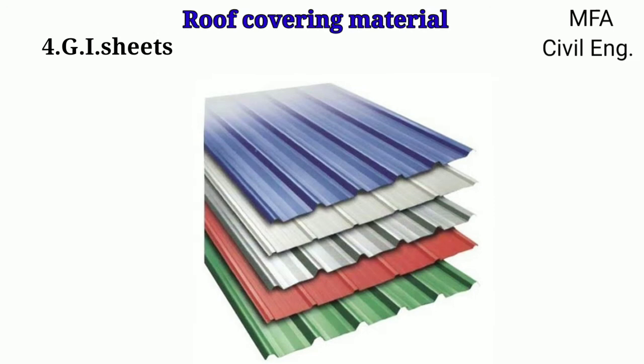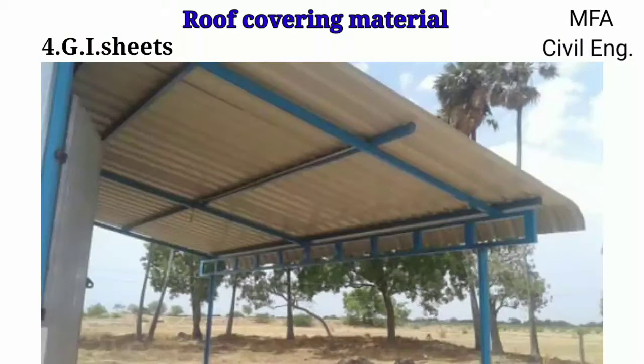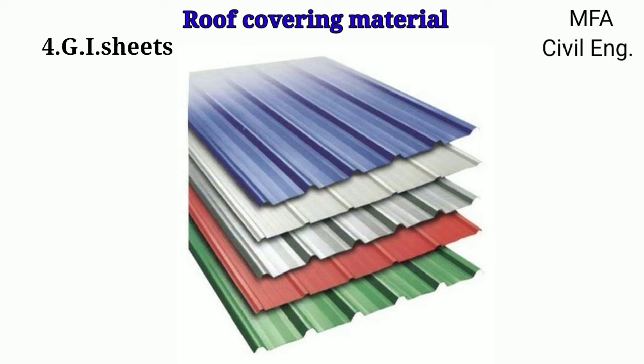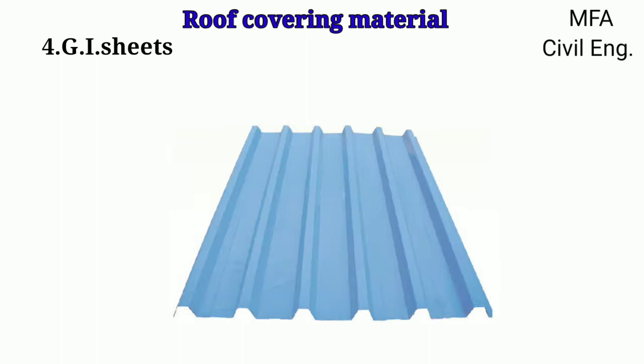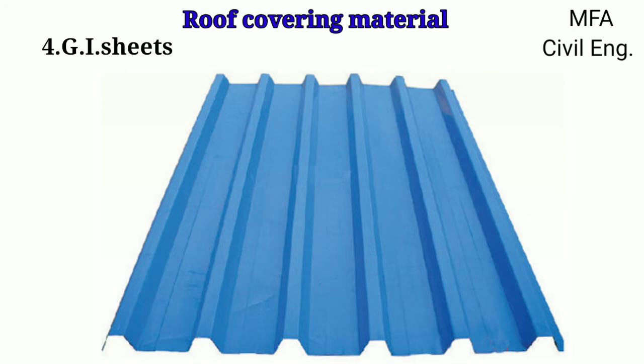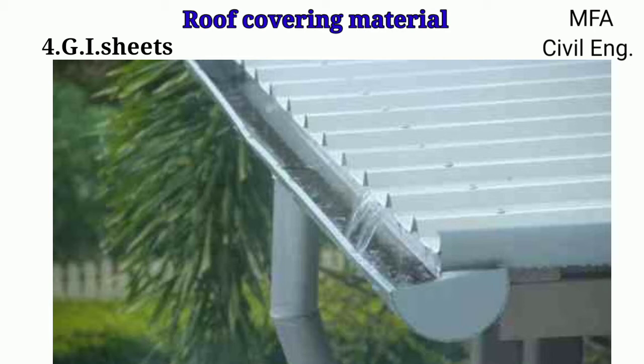Galvanized iron sheets are extensively used as a roof covering material in factories, workshops, sheds and cheap buildings. These sheets are comparatively light in weight, easy to handle and can be fixed easily, but without attractive appearance. These sheets are manufactured in a corrugated form from one end to another. Corrugation helps in proper discharging of water away from the sheets. The iron sheets are galvanized with zinc to protect them from the rusting action of wet weather.